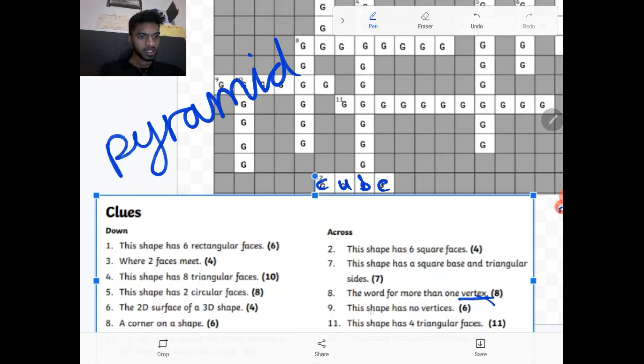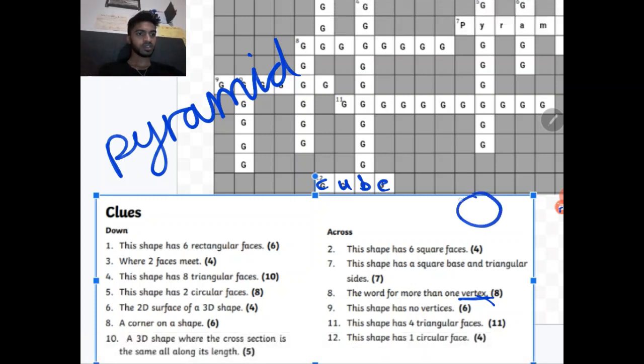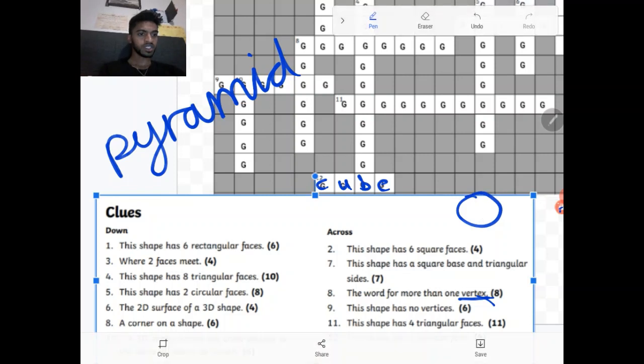Number 9. This shape has no vertices. So that would be a sphere. Because in a sphere it's perfectly round and no edges meet to make anything sharp. So it has no vertices.